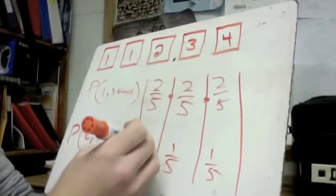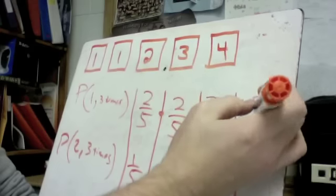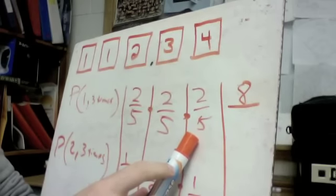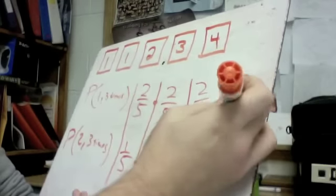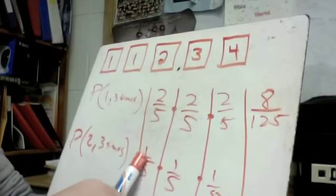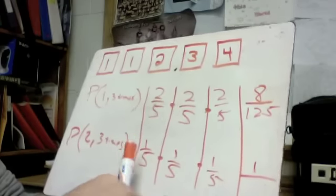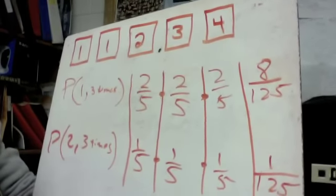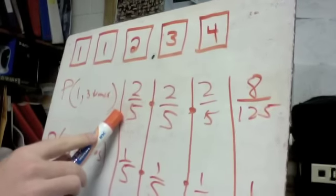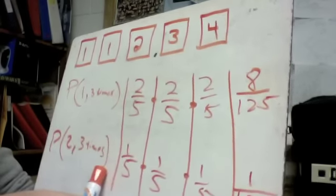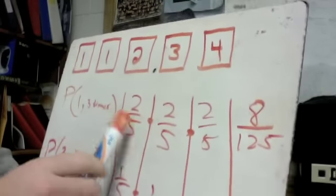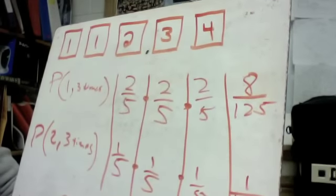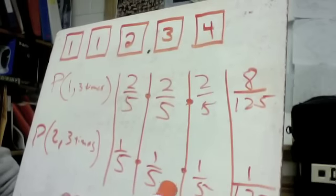Multiplying all three together: for drawing a one — two times two times two is eight, and five times five times five is 125, giving eight out of 125. For drawing a two — one times one times one is one, and five times five times five is 125, giving one out of 125. Eight out of 125 is a very small amount, and one out of 125 is even smaller.